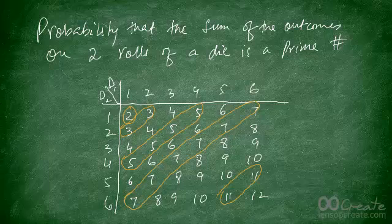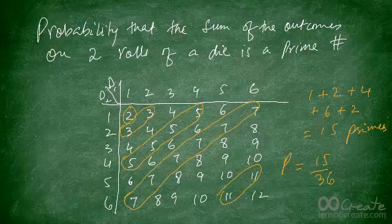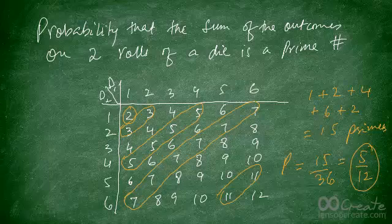If you count them: 2 occurs once, 3 occurs twice, 5 occurs 4 times, 7 occurs 6 times, and 11 occurs twice. Adding them up gives a total of 15 prime outcomes. So the probability of getting a prime sum when rolling 2 dice is 15 out of 36, which simplifies to 5 out of 12. There are 15 possible prime sums you can get.